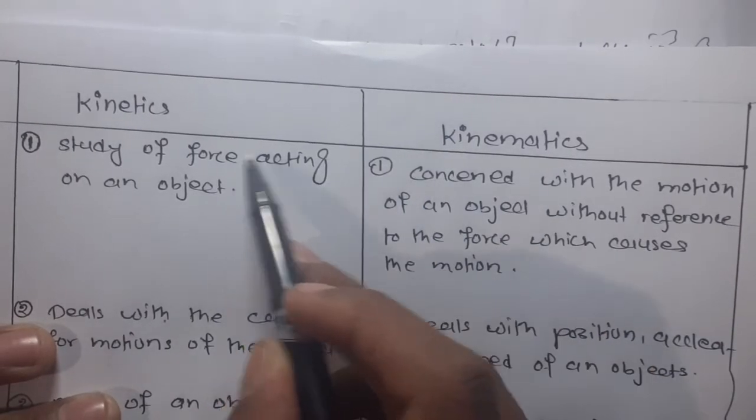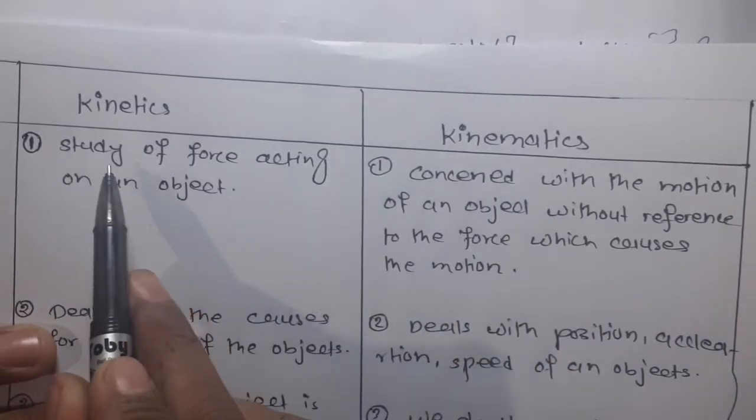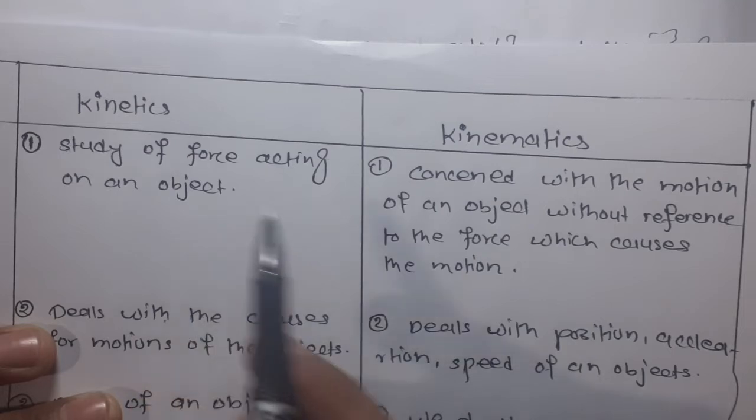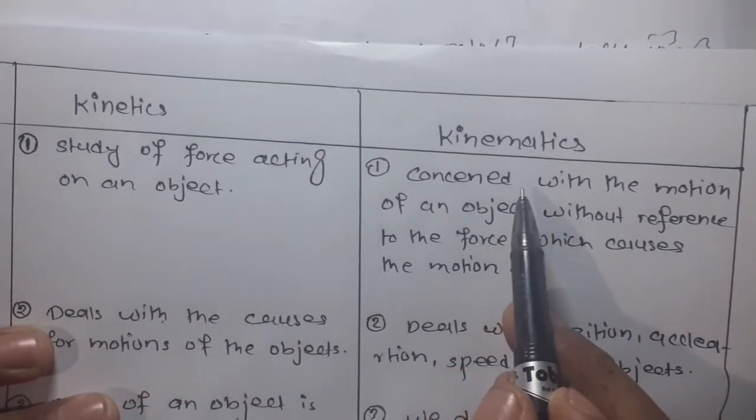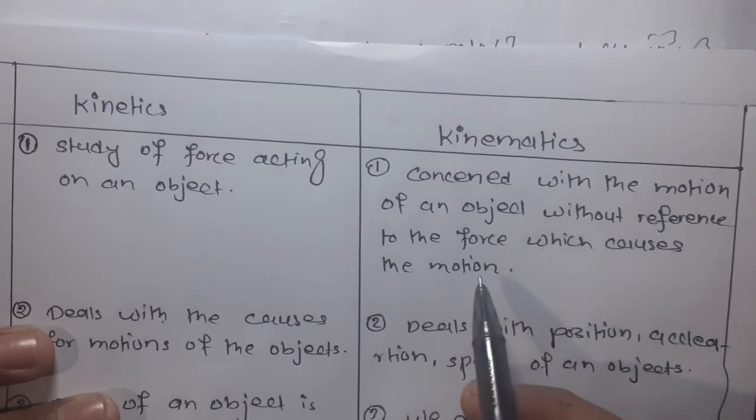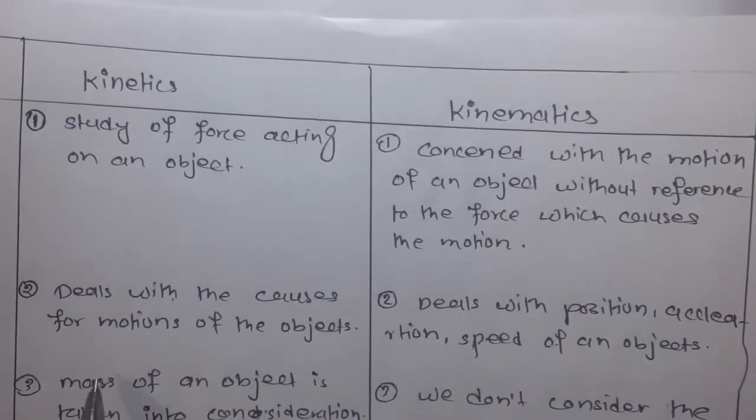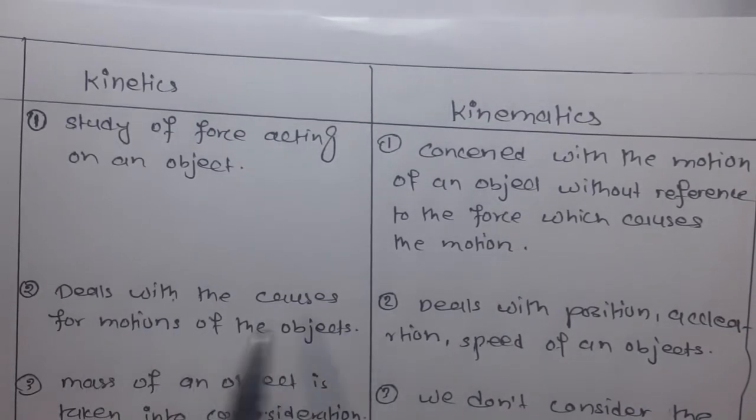The difference between kinetics and kinematics: kinetics is the study of force acting on an object, and kinematics is concerned with the motion of an object without reference to the force which causes the motion. Kinetics deals with the causes for motion of the objects.